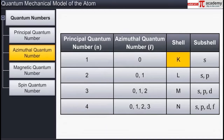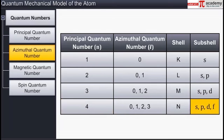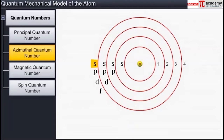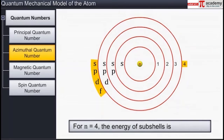The subshells in the K shell for n equal to 1 is s. In the L shell with n equal to 2, the subshells are s and p. In the M shell for n equal to 3, the subshells are s, p, and d. In the N shell for n equal to 4, the subshells are s, p, d, and f and so on. The s subshell has the lowest energy and the energies of the subshells within the same principal shell follow the order: s less than p less than d less than f.